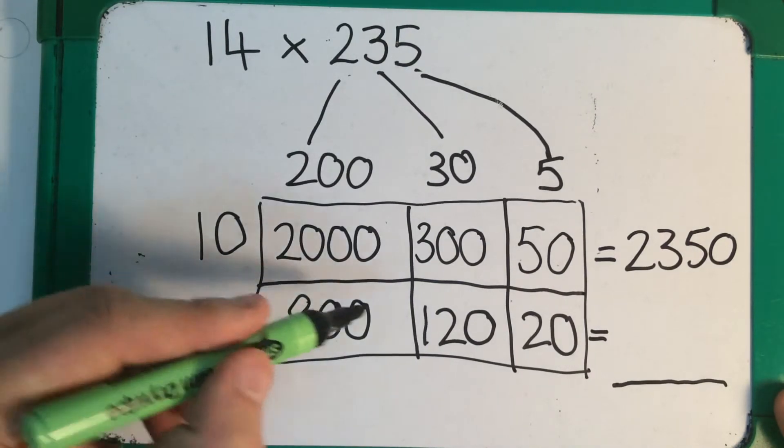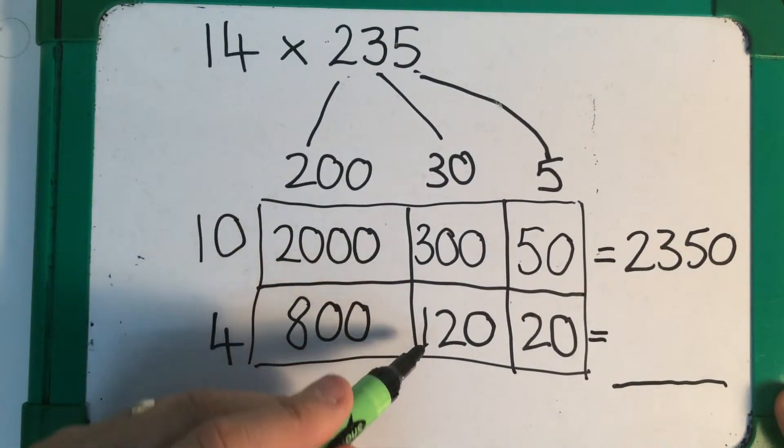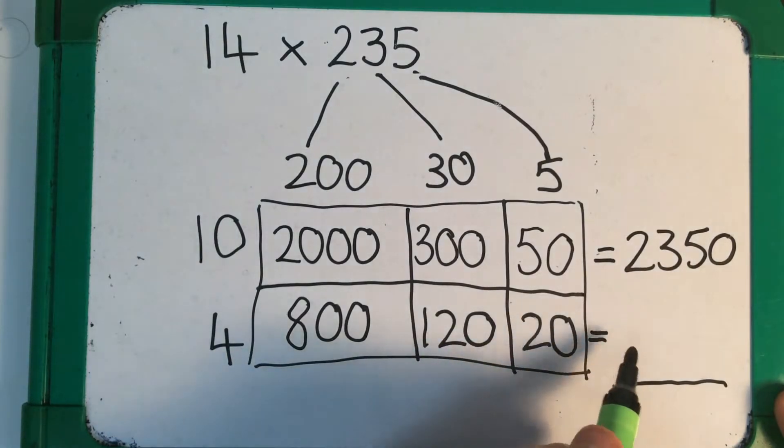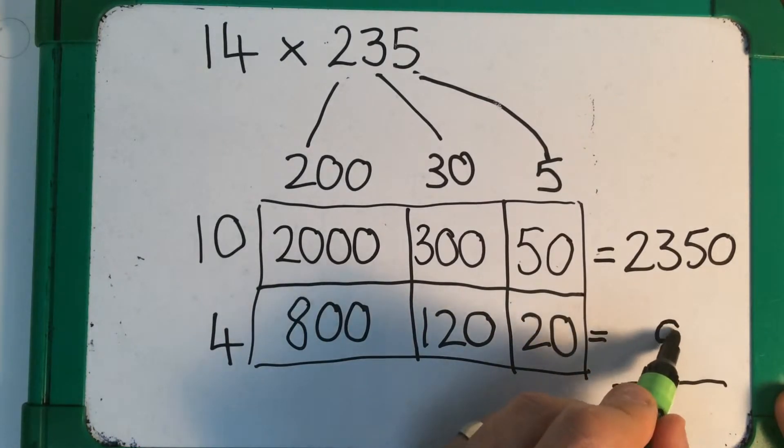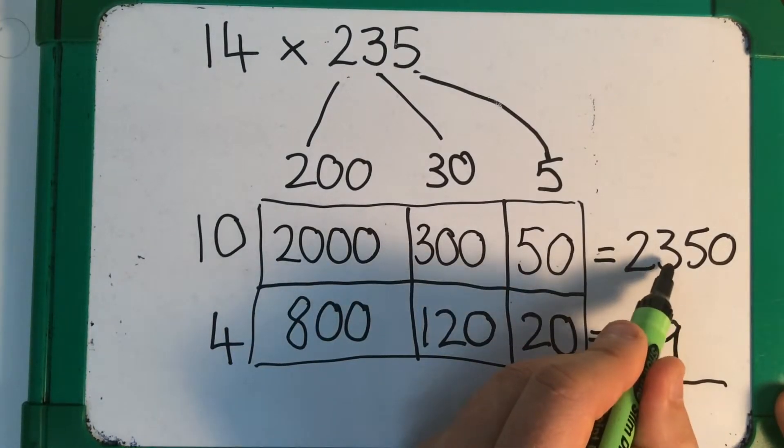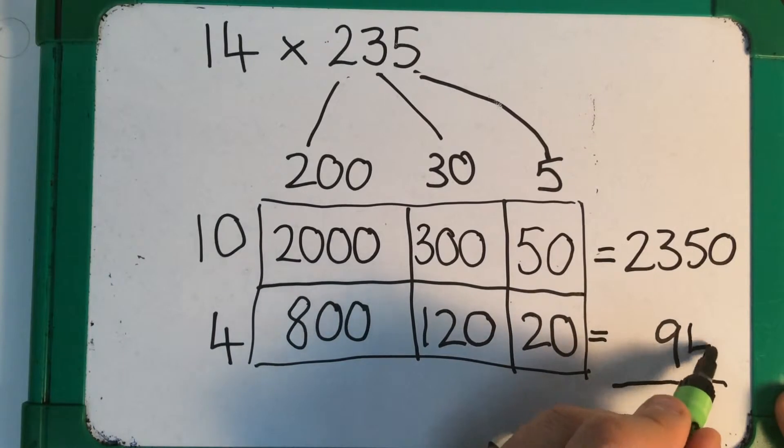Here we have 800 plus 120 is 920, 940. Now I'm going to be careful to put my 940 so that the 900 is in the same place underneath the hundreds of this number.